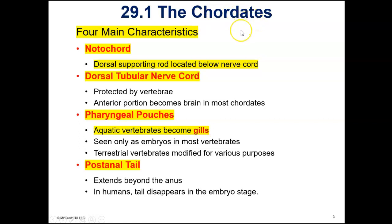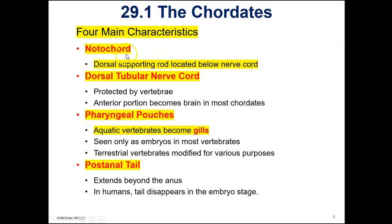Most of them are also vertebrates, but not all. There are chordates that don't have a true backbone. For the phylum chordata, all of them have these four characteristics in common. All of them have a notochord, at least the presence of a notochord.